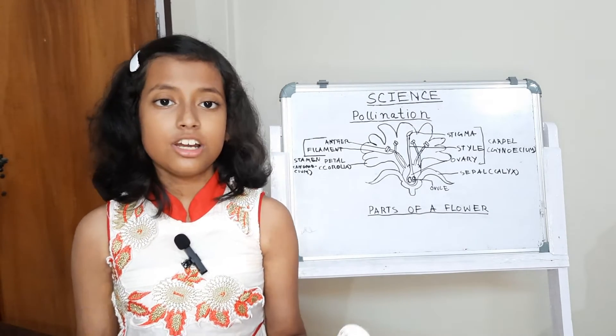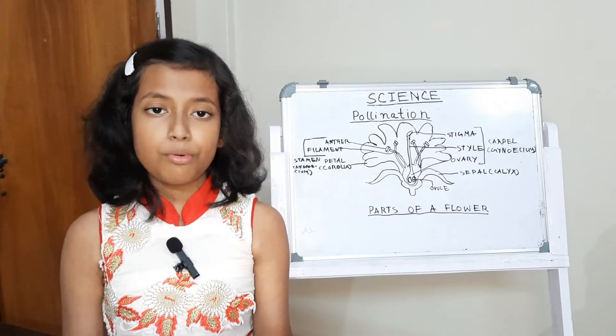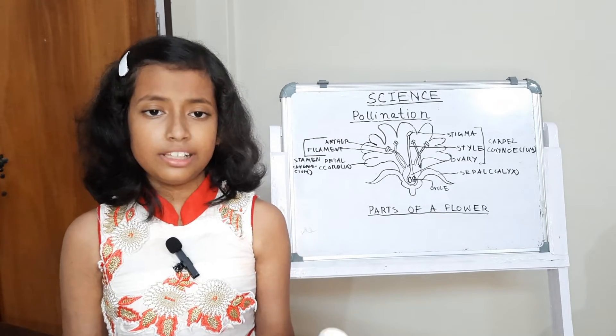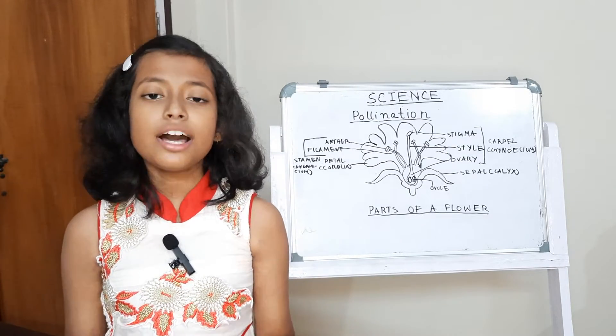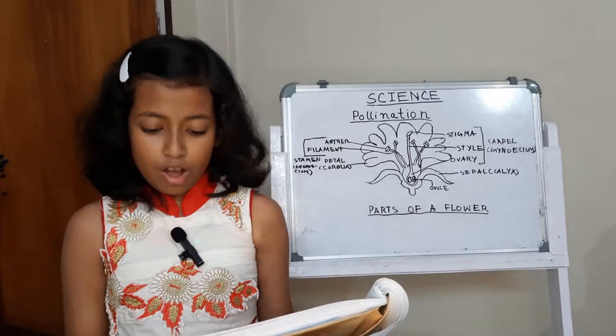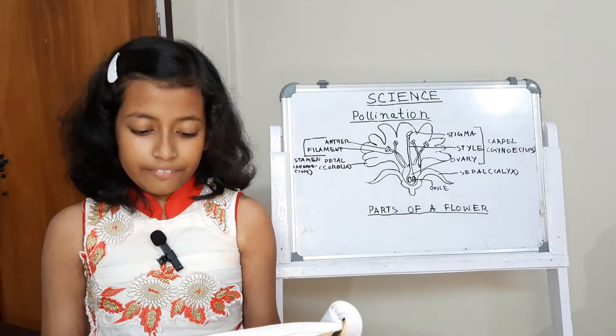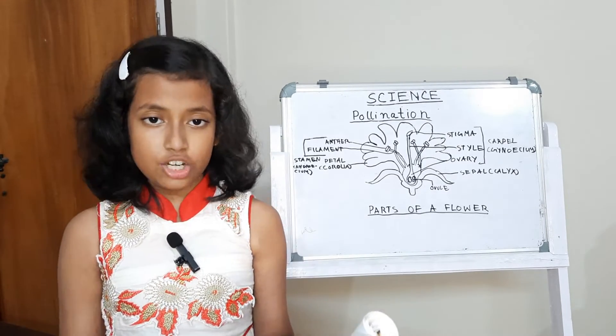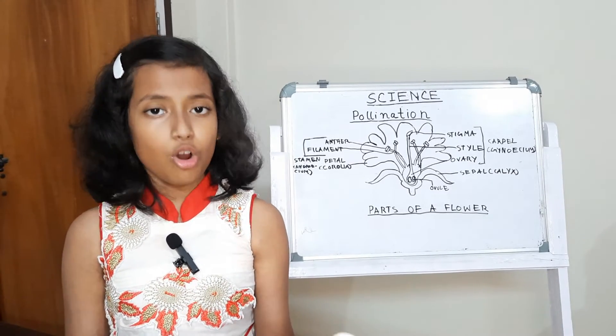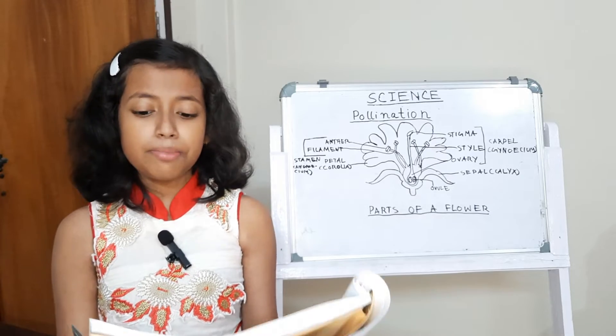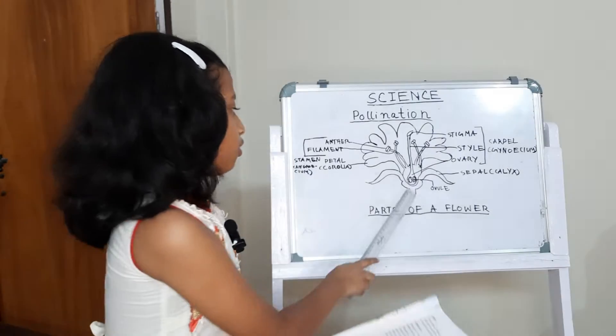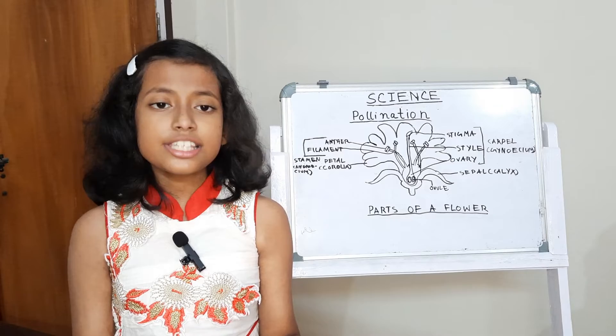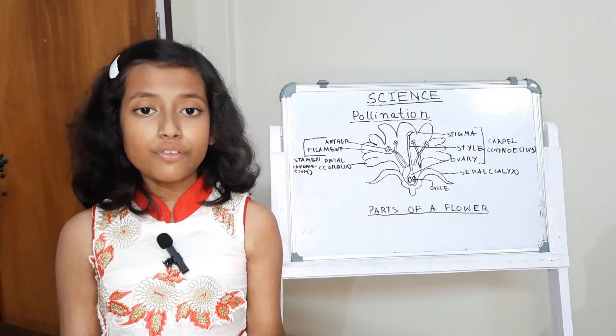Gynosium is the innermost whorl of a flower. It is the female reproductive part of a flower. It consists of one or more pistils or carpels. Each carpel consists of stigma, style and ovary. Stigma is the knob-like structure at the tip of the pistil. It is sticky and receives the pollen grains. Style is the tube-like structure which connects stigma to ovary. Ovary is the swollen portion at the base of the pistil. Inside the ovary, there are ovules. Ovules are small egg-like structures which contain the female reproductive cells. It is the ovary which develops into fruit and ovule which develops into seed.